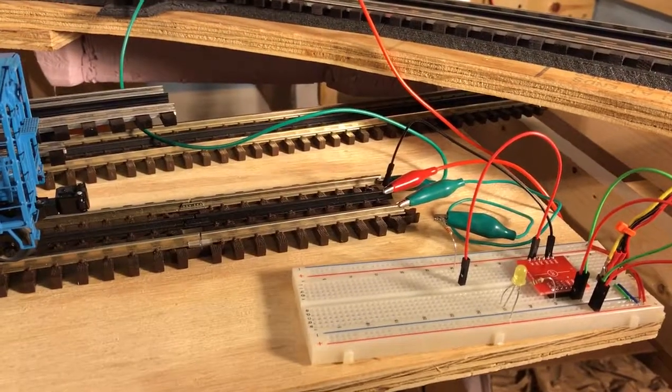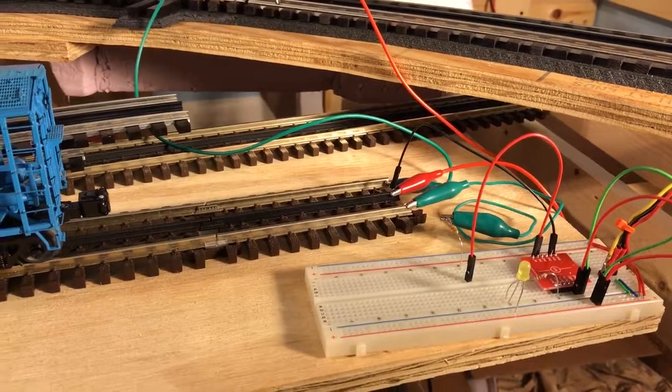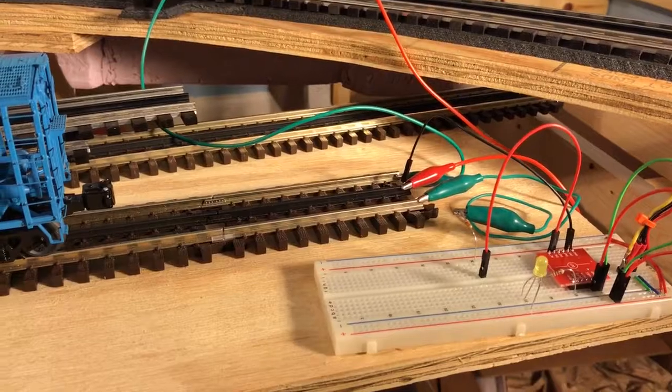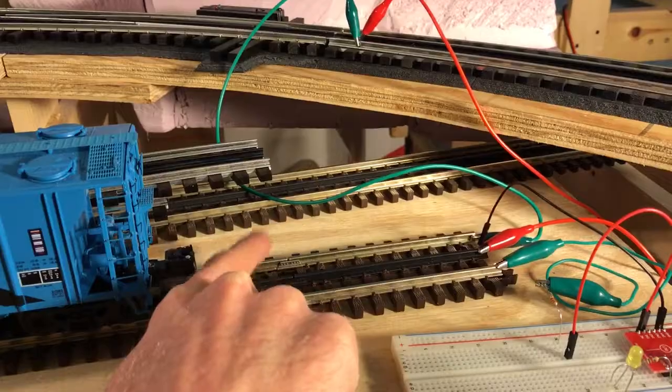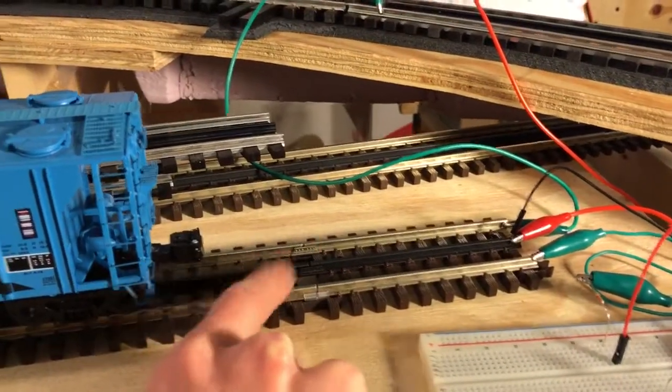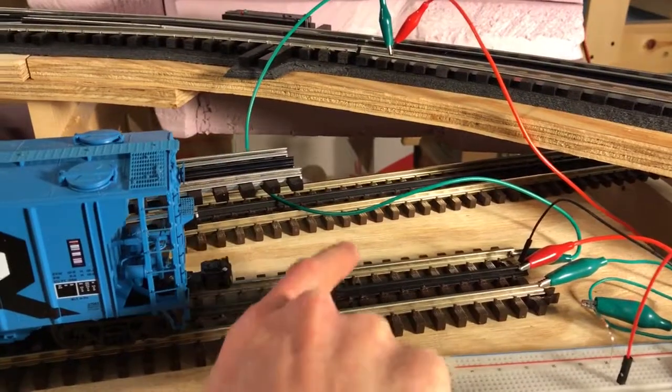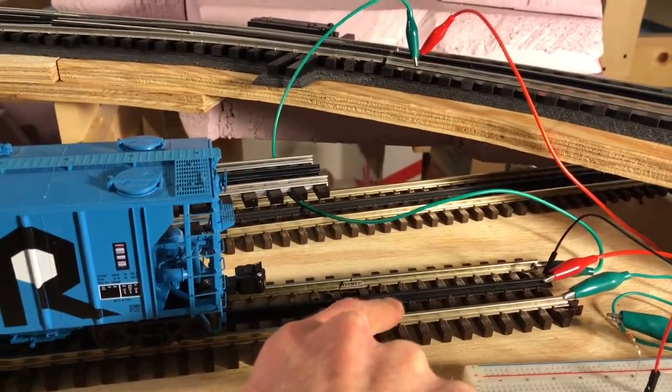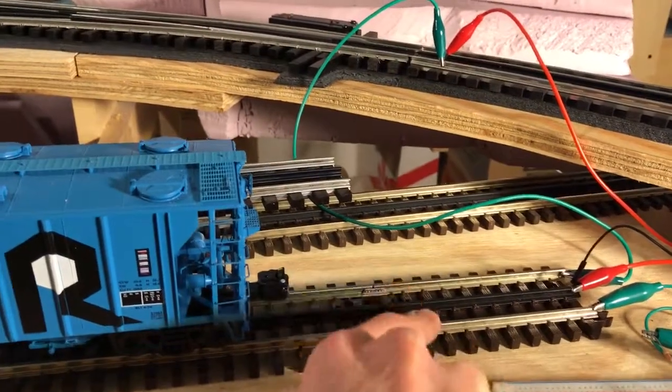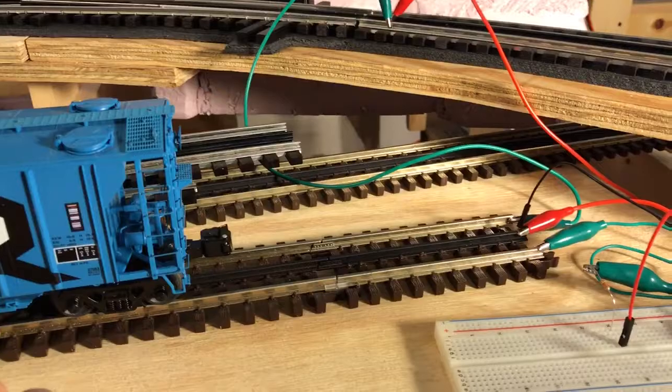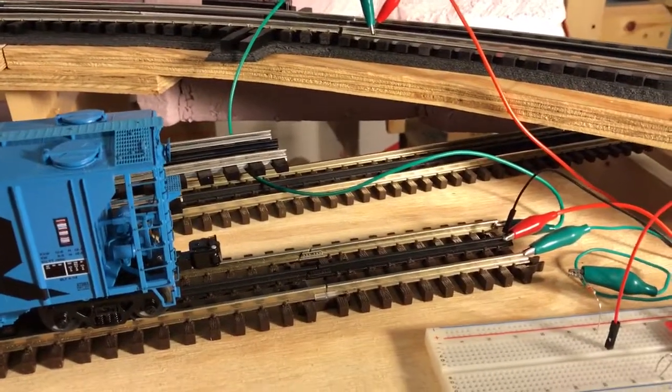The basic idea here is that we're using the third rail as an isolated rail. If we have one, two, three rails, the third rail here is isolated. Because the axle conducts electricity through, if we detect that we have a voltage on this rail versus the center rail, then we know that the track is occupied. The way that I'm making this work is through an opto-isolator.